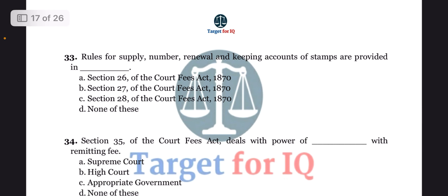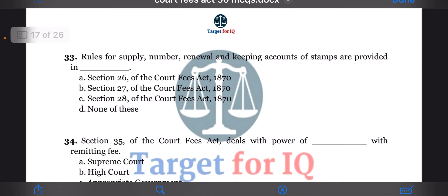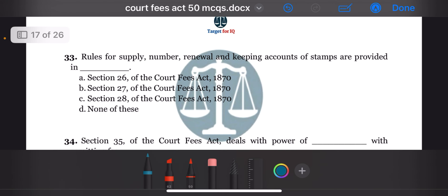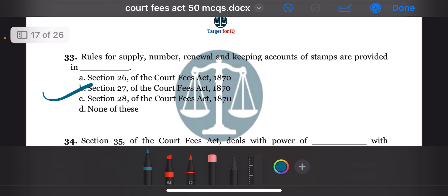Next question: rules for supply, number, renewal and keeping accounts of stamps are provided in dash. The options are A. Section 26, B. Section 27, C. Section 28, or D. None of these. The correct answer is option B. Section 27.